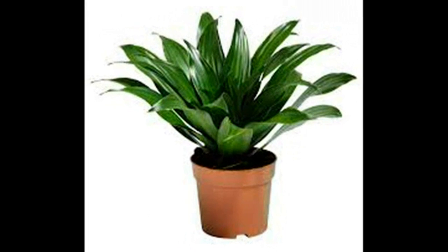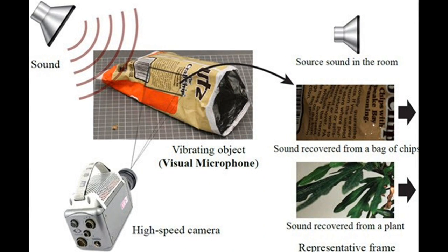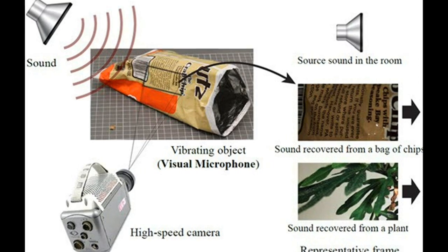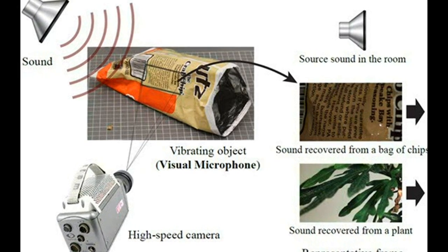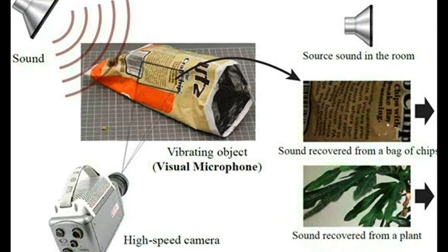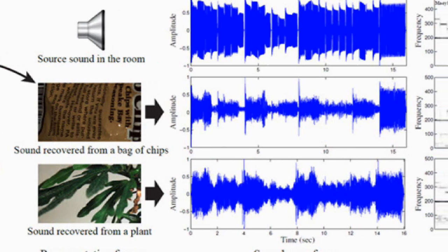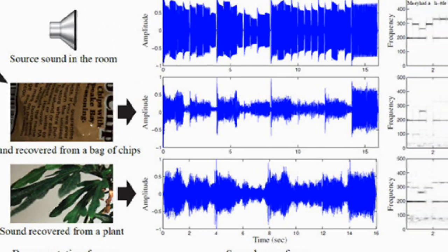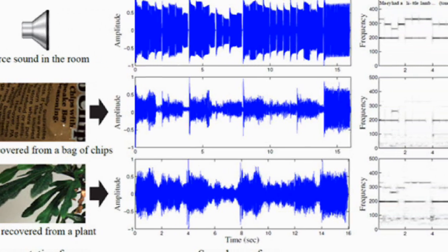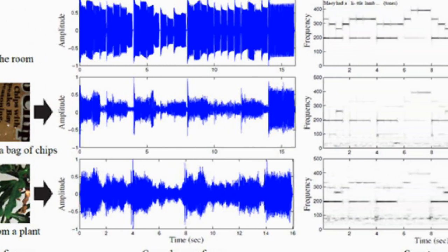When sound hits an object, it causes the object to vibrate. The motion of this vibration creates a very subtle visual signal that's usually invisible to the naked eye. People didn't realize that this information was there.